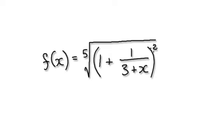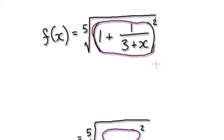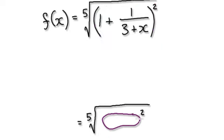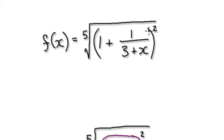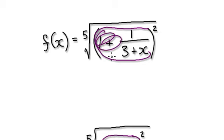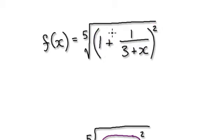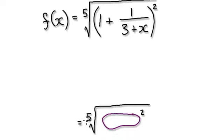Okay, so to do this, visualize this as being like this — visualize it as this being in a bubble. So you've got a bubble here, squared, and then take the fifth root of the whole thing. So visualize this thing here as being your bubble, then you square it and take the fifth root.